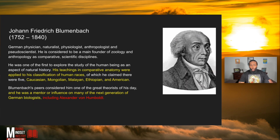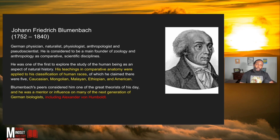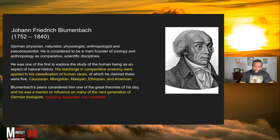So who is the ultimate father of creating race? It's a guy by the name of Johann Friedrich Blumenbach. He was a German physician, naturalist, sociologist, anthropologist, and pseudoscientist. His teachings in comparative anatomy were applied to his classification of human races, of which he claimed there were five races.